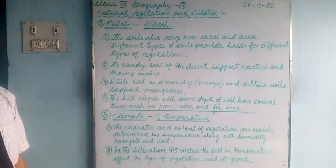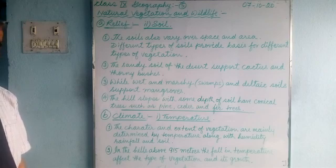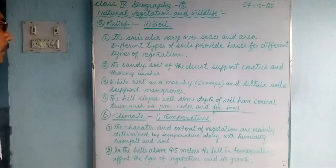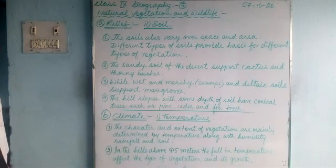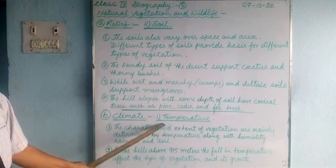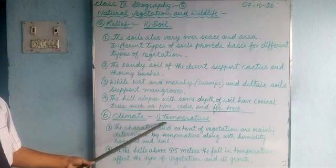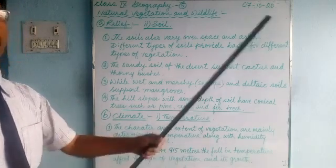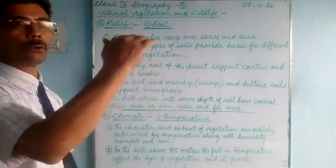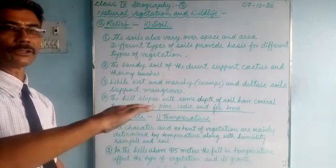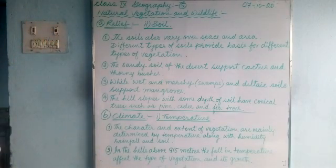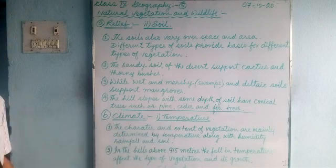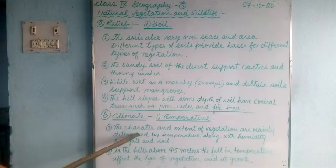Plants require certain types of soil in order to grow; you cannot grow plants in all kinds of soils. Moving to factor B — climate — which is divided into temperature, precipitation, and photoperiod, as we learned in our previous class. Temperature affects plants. The higher you go in mountain areas, the lower the temperature, and plants do not grow very tall — they have stunted growth. The character and extent of vegetation are mainly determined by temperature.